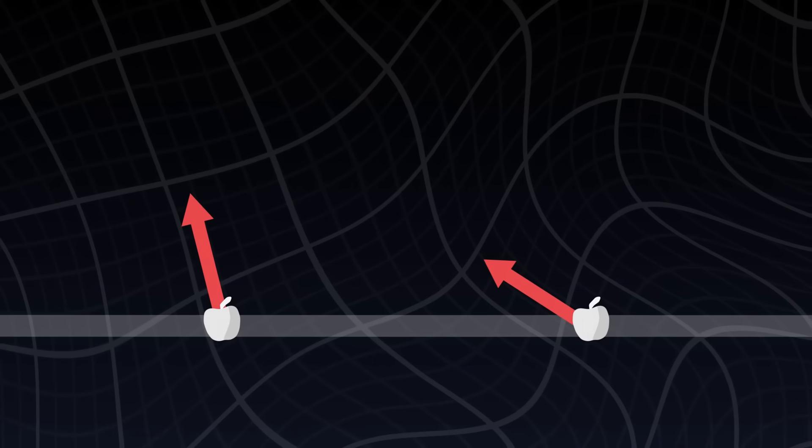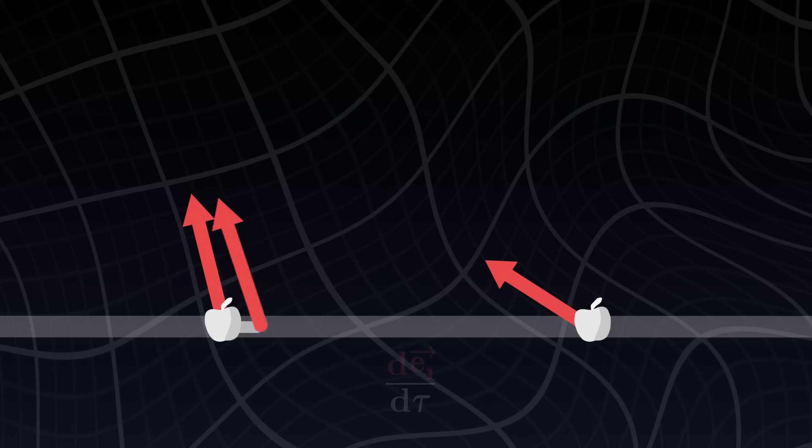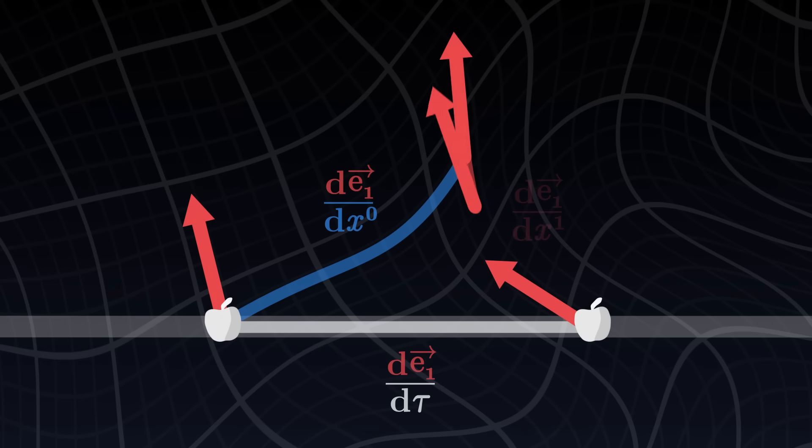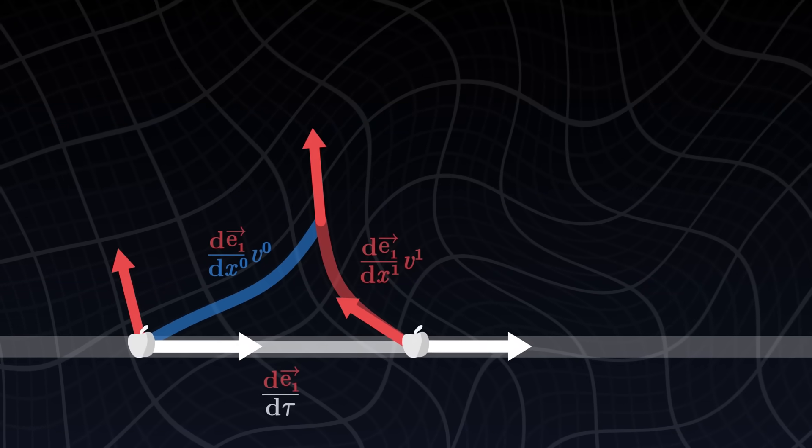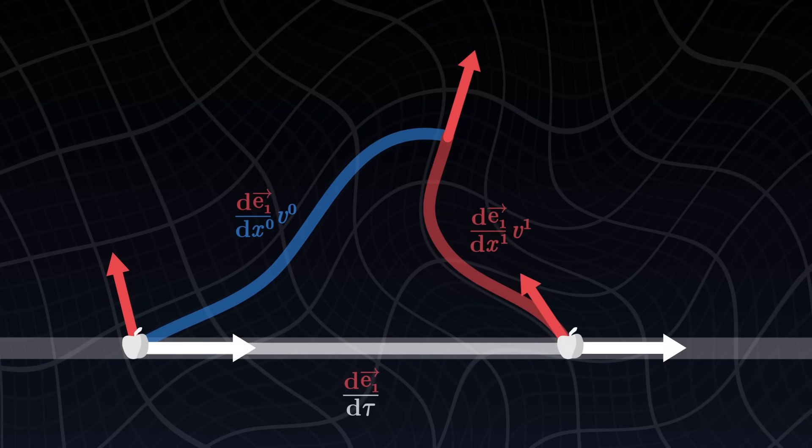When we think about it, the evolution of a basis vector along the worldline can be decomposed as the sum of its evolution along each of the two coordinates, multiplied by the speed of the apple, because the faster the apple moves, the faster the basis vector will vary.